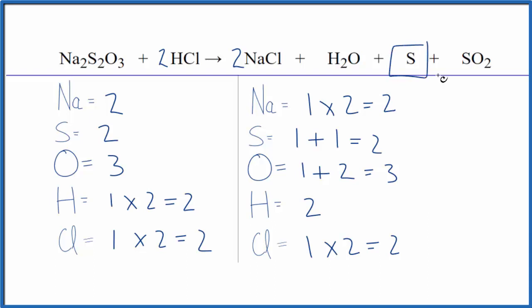But this sulfur right here, this would be a solid. So when you do the reaction, as the sulfur is formed from these two reactants, the actual liquid gets cloudy. And that's why they call it the disappearing cross because you can't see through it.